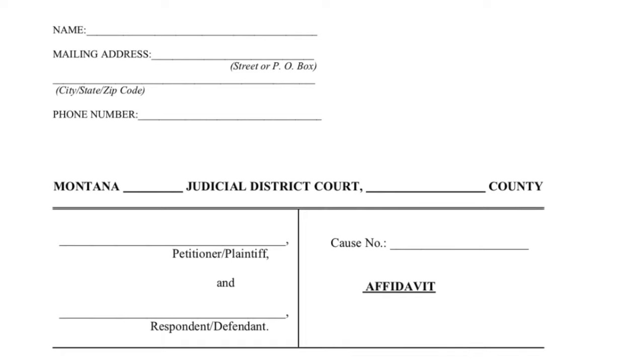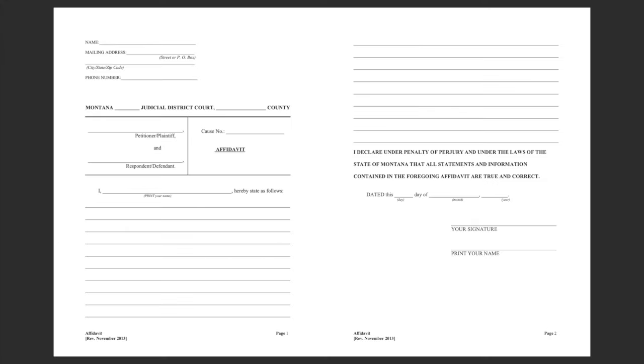The affidavit is a statement signed by you which must be filed at the same time as your motion. You are declaring under penalty of perjury that all information contained in your statement is true and correct. This statement is where you will tell the judge all of the important and relevant facts in support of your motion. An affidavit is a form of evidence that the court can consider when making decisions, just like giving testimony in court. Your affidavit must include only the facts that you know from personal experience.